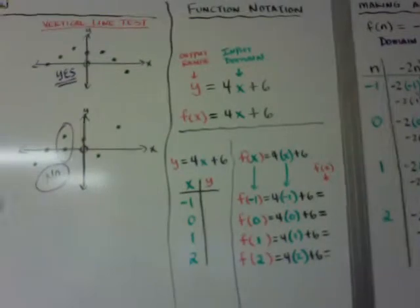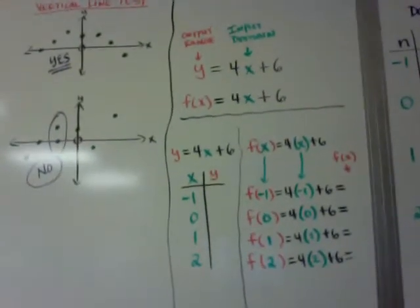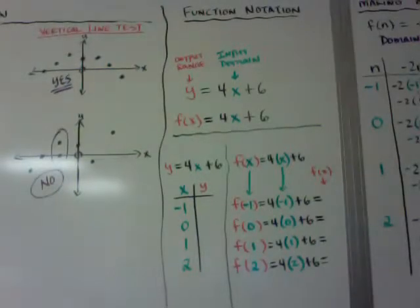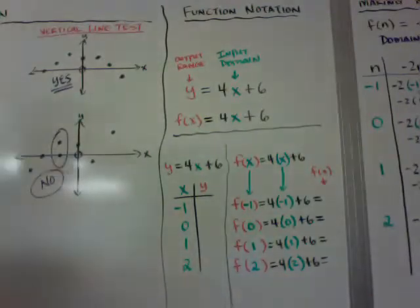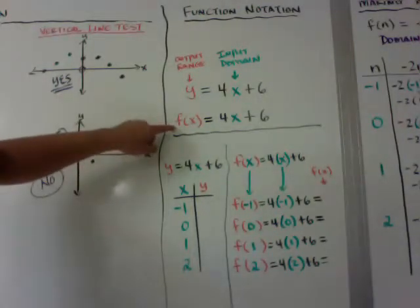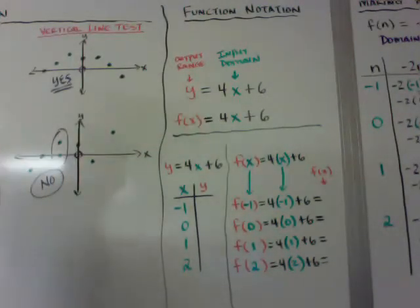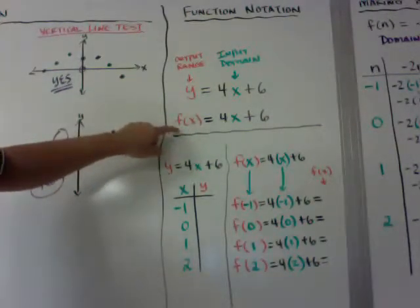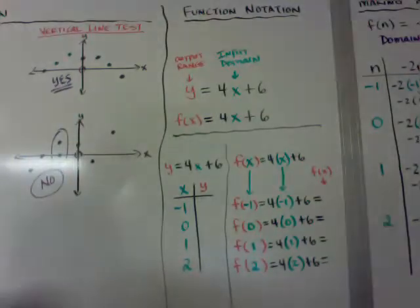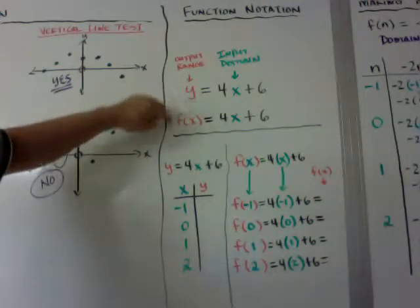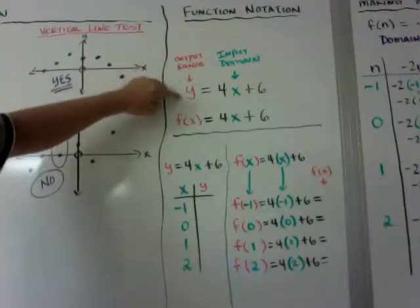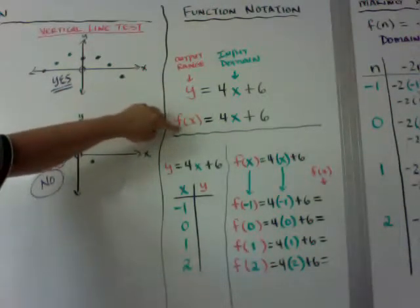Now, function notation. If they give you an equation such as y = 4x + 6, you can rewrite it as f(x) = 4x + 6. You say 'f of x is equal to 4x plus 6.' Y and f(x) are interchangeable — it's still your output and still your range.